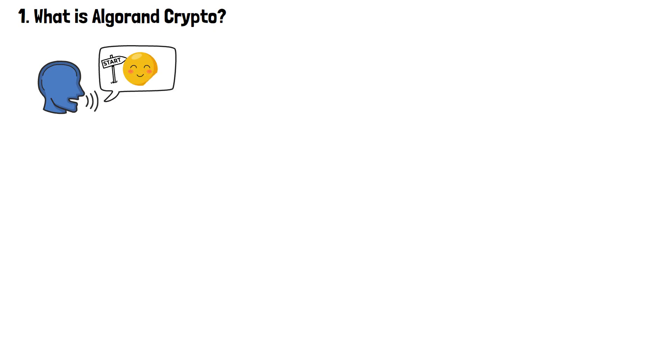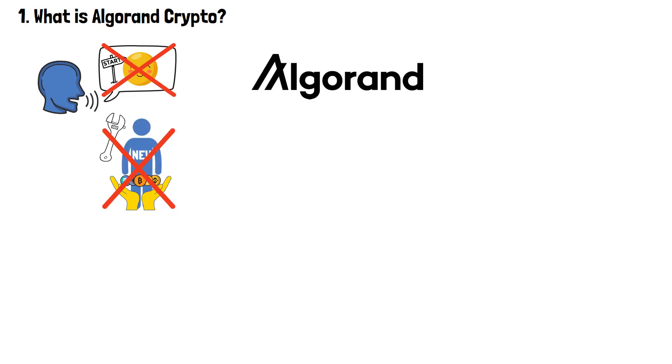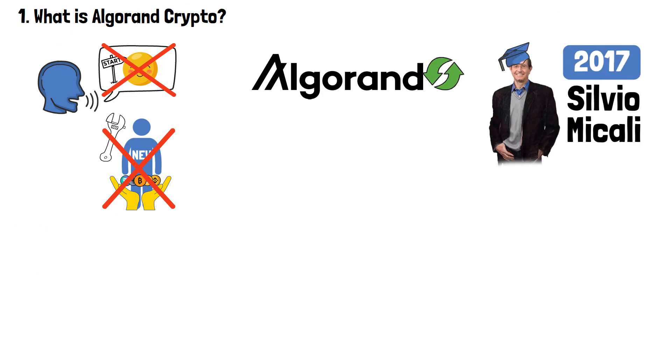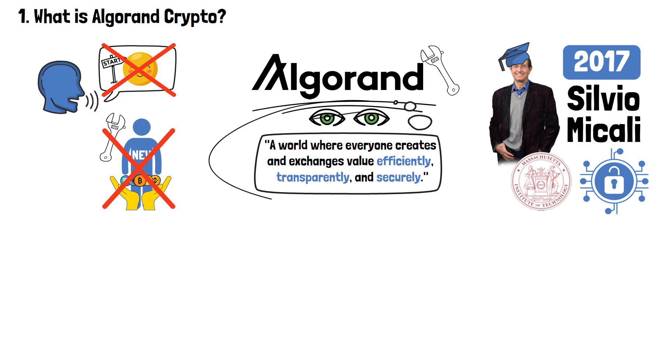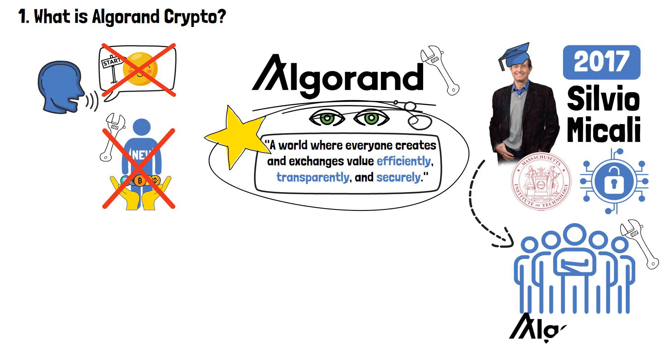You couldn't say that Algorand had humble beginnings, since it wasn't founded by some inexperienced crypto enthusiasts. Quite the contrary! Algorand was founded in 2017 by Silvio Michali, a professor at MIT and a cryptography pioneer. It was created to carry out a vision which, according to Algorand themselves, sounds like this: A world where everyone creates and exchanges value efficiently, transparently, and securely. And so, having this vision as their guiding star, Silvio Michali and his team created Algorand.